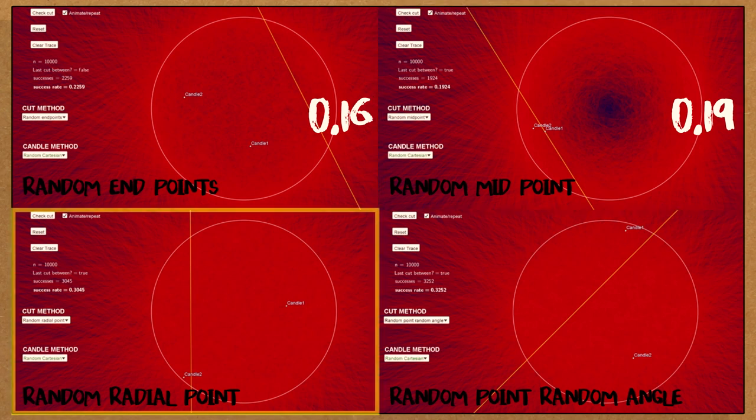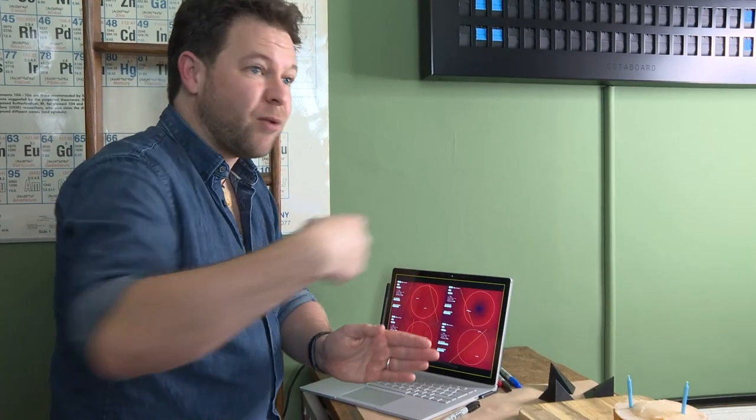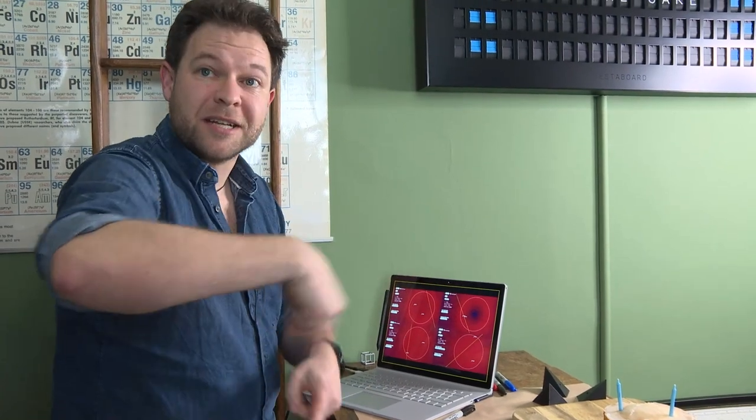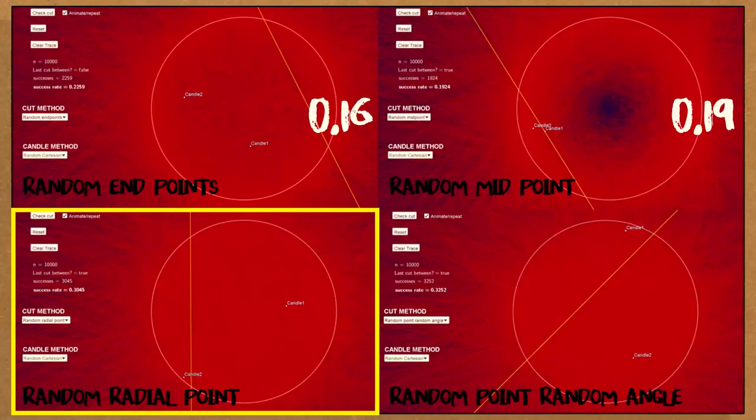This one ends up settling down to about 0.19. This one over here is choosing a random radial point, so that's choosing some distance along a radius at some angle around the centre, and using that as the midpoint. Different distribution again.